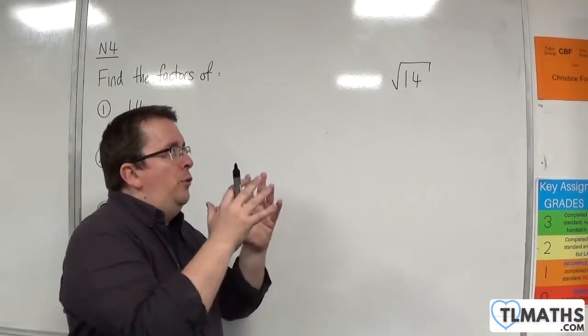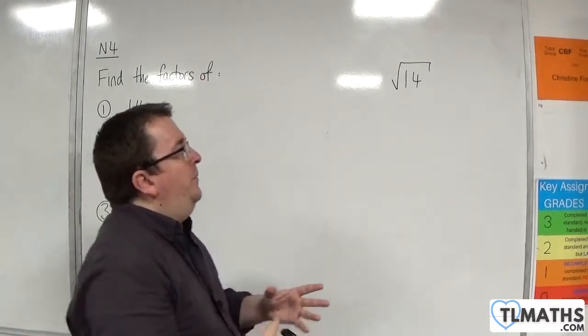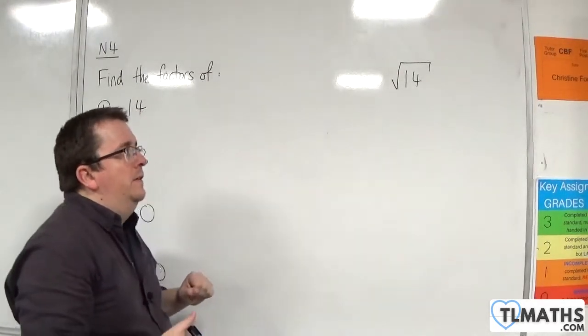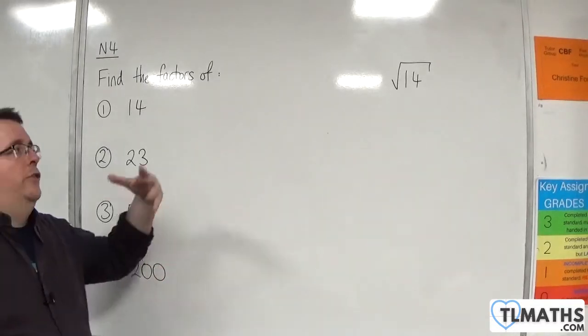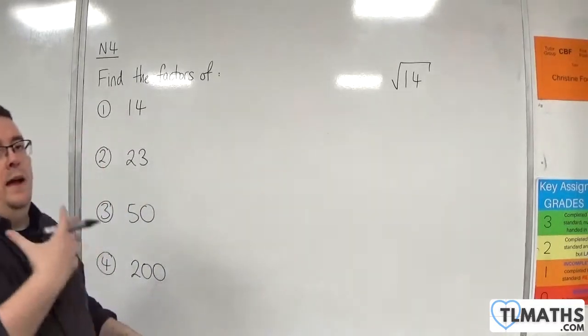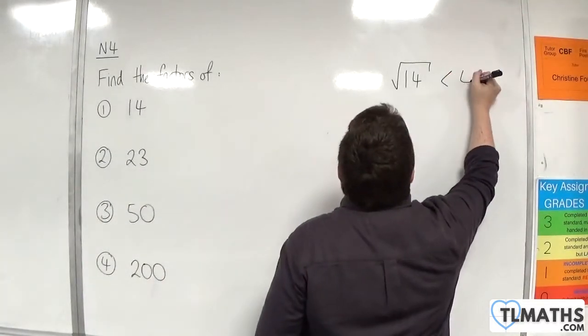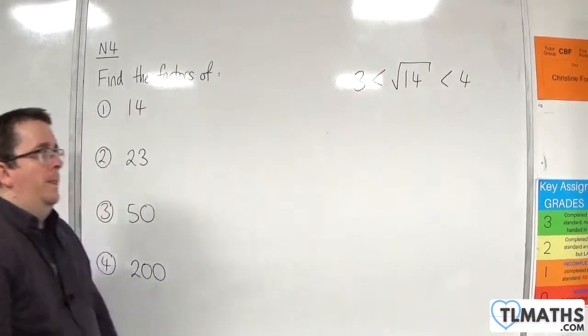This is all down to whether you know your square numbers or not. The square numbers either side of 14 are 9 and 16. 3 squared is 9, and 4 squared is 16, which means that this is somewhere between 3 and 4.